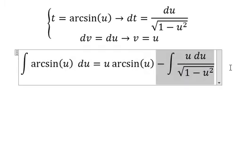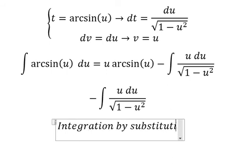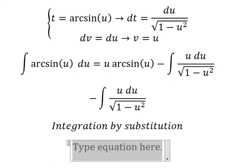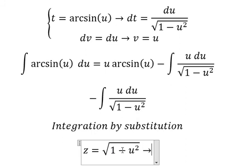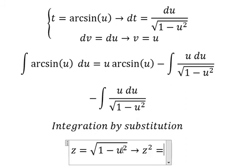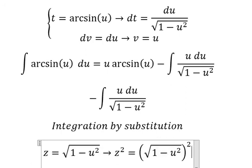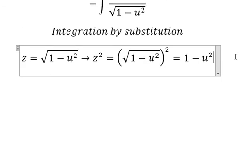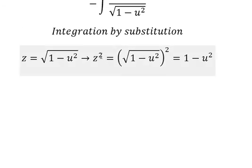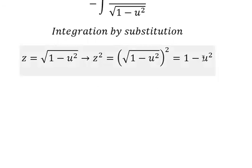Now I will go to this one. So we need to use integration by substitution. So I will put z equals to this one. Then we put the square for both sides to cancel the square root. So we have z squared equals to 1 minus U squared.